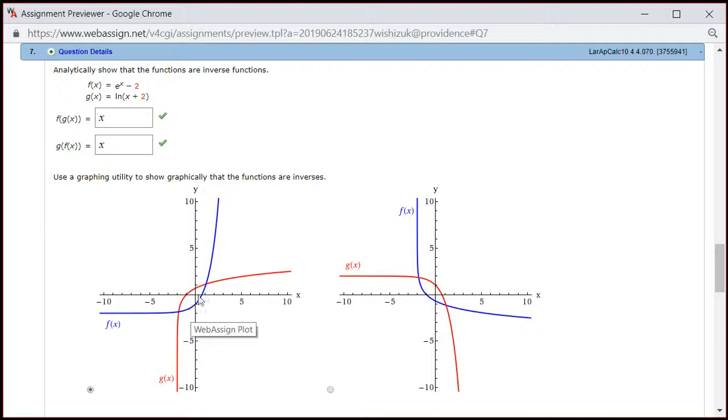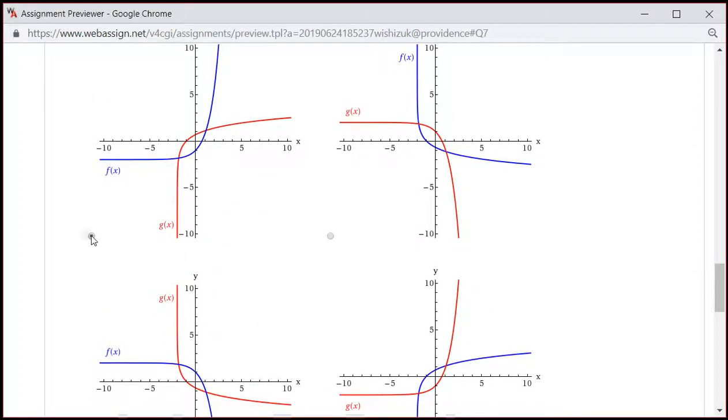g of x is its inverse, so you can see the symmetry about the 45-degree line, y equals x. So this must be the correct answer.